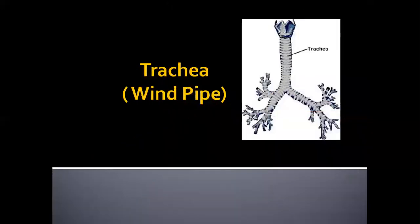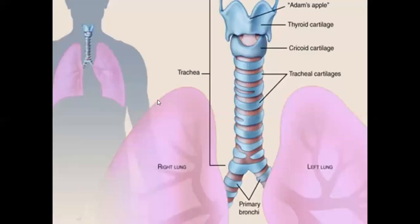Moving on to another organ of the respiratory system: the trachea, which you can also call the wind pipe. Looking at the quick anatomy of the trachea, you can see rings. These are C-shaped rings, and they are basically cartilages called tracheal cartilages.